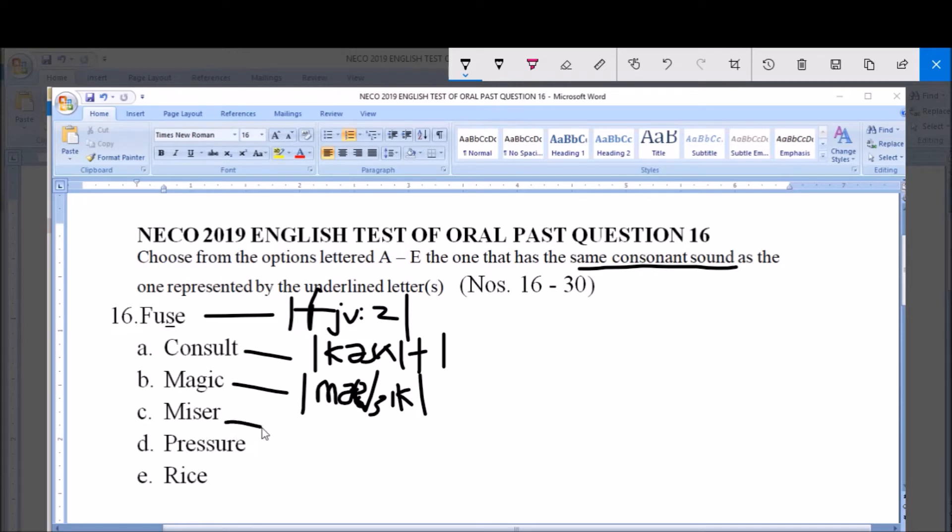Option C is pronounced as 'Miser' - /maɪzə/.